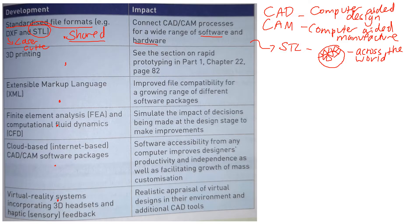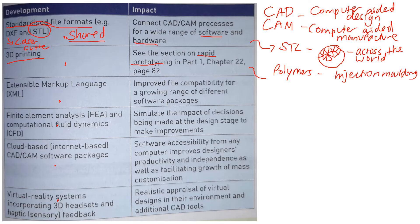Another advancement is 3D printing, also called rapid prototyping, because it is still primarily used for producing prototypes rather than full products. For polymers, injection moulding is still used, and for metals, some kind of casting is typical — although metals are starting to be 3D printed, which is quite an exciting development. 3D printing really changed the way things are manufactured and brings a lot of different options.